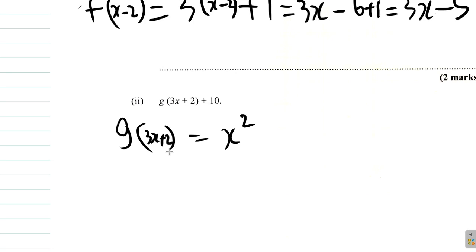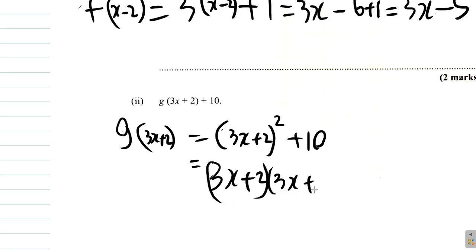Same thing will happen here. x squared is no longer x squared. It will be 3x plus 2 squared. And we add 10 to it. So, what you have is 3x plus 2 times 3x plus 2 plus 10.